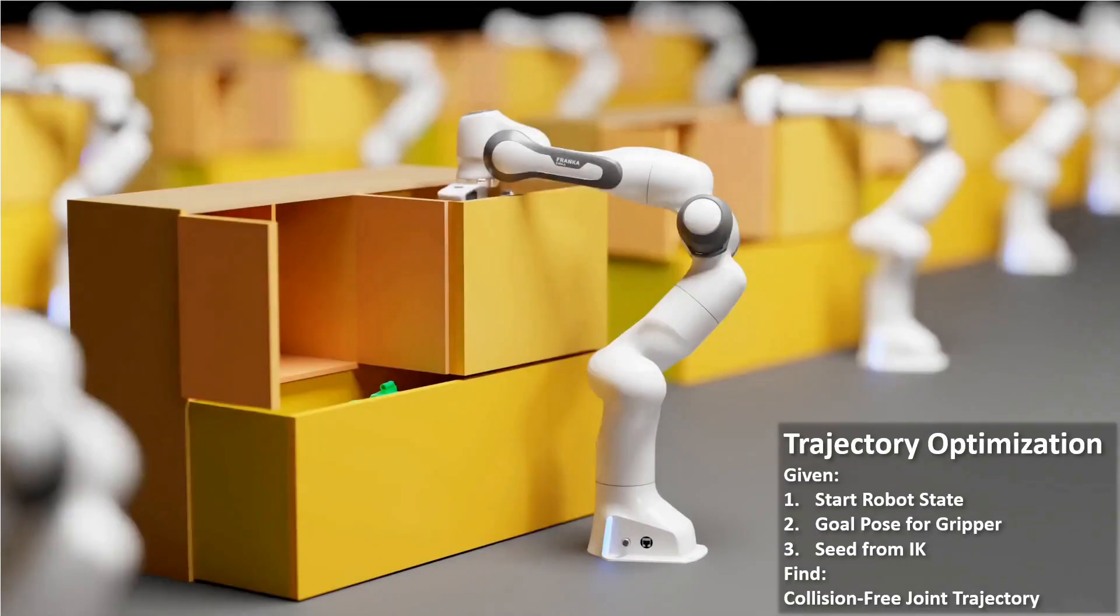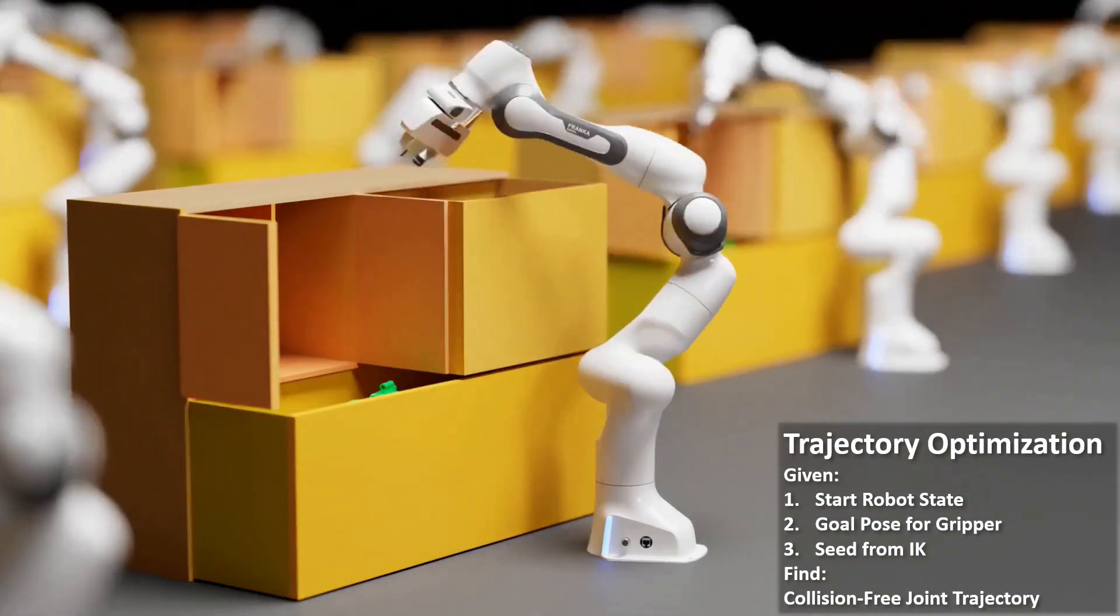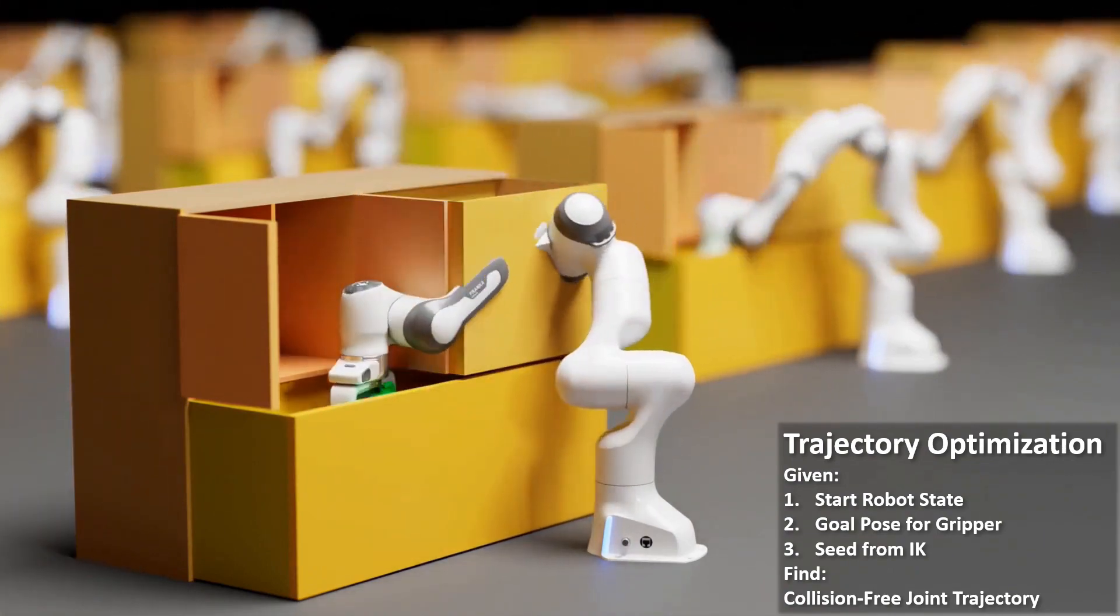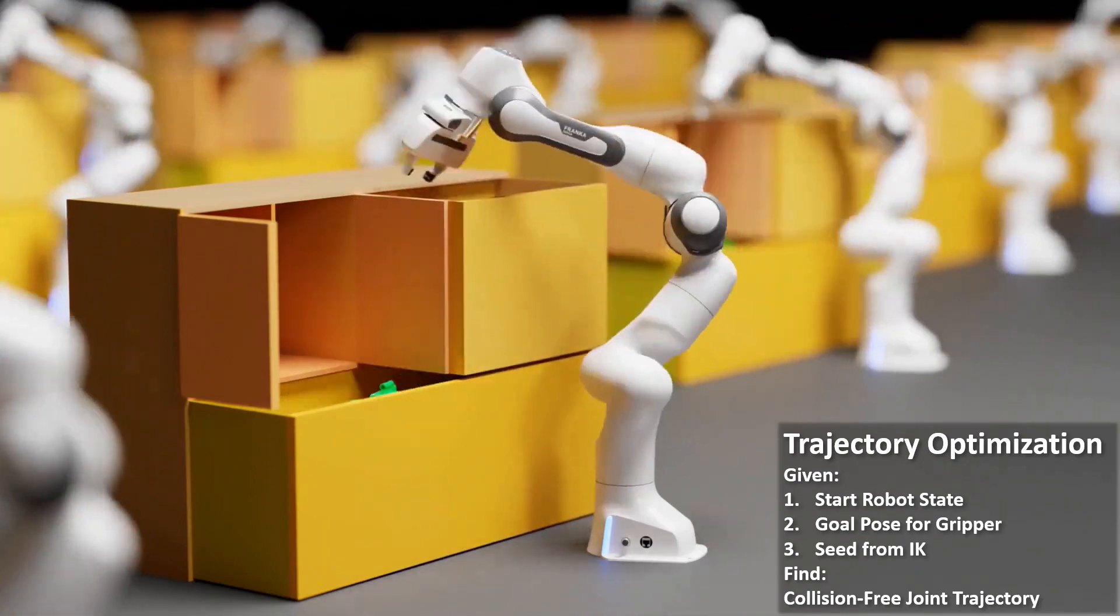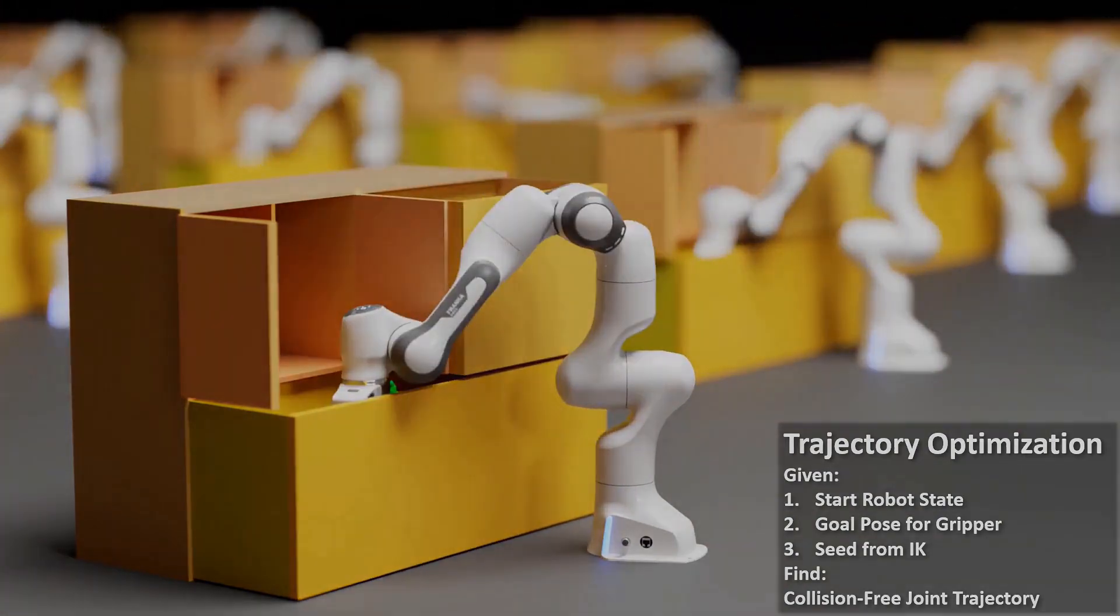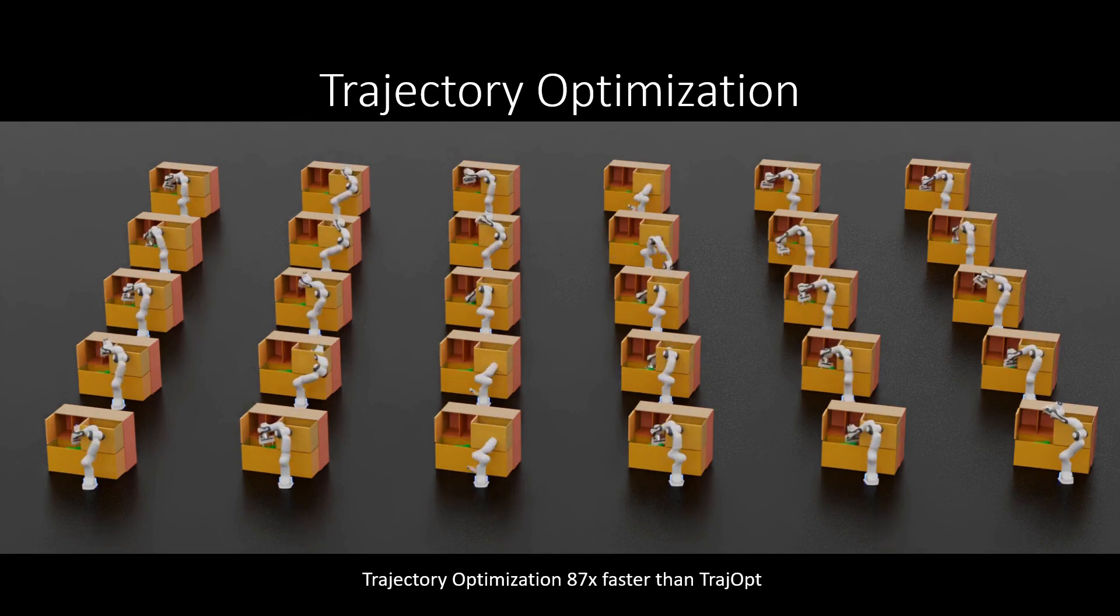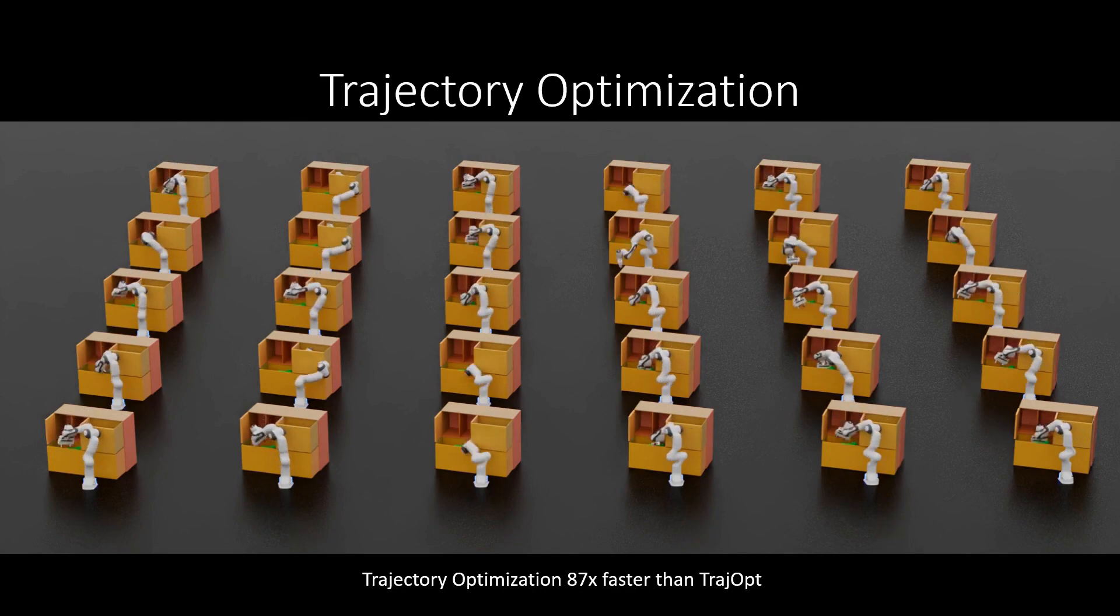The IK solved goal states are used to generate seeds for trajectory optimization through linear interpolation from the start state. These linearly interpolated seeds could be in collision as seen here. Over many iterations of the solver, the path is made collision-free and smooth. Trajectory optimization is run over 30 seeds in parallel and even with these many seeds, the optimization is 87 times faster than Trac IK implementation in C++.